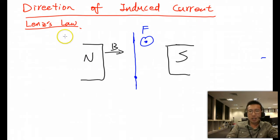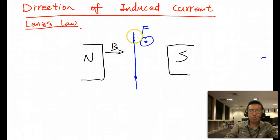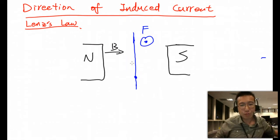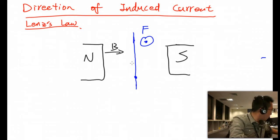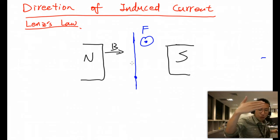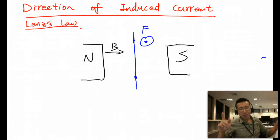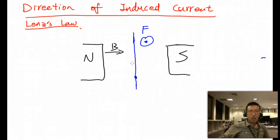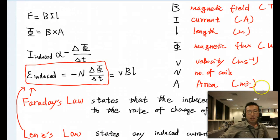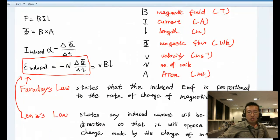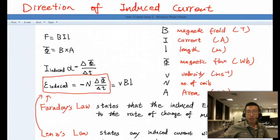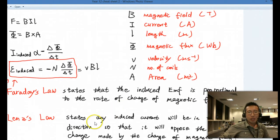The question is: Lenz's Law tells us the direction of the induced current — the current produced by the applied force. To answer this, you need to use the right-hand rule, but remember it's a little bit different in this case. Let's look at Lenz's Law.